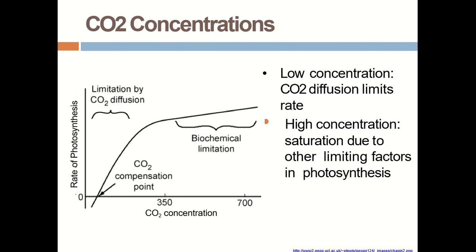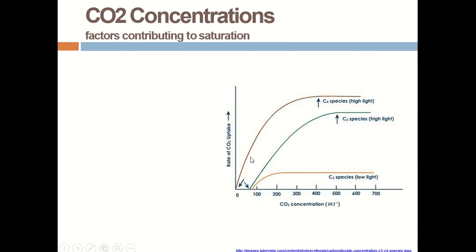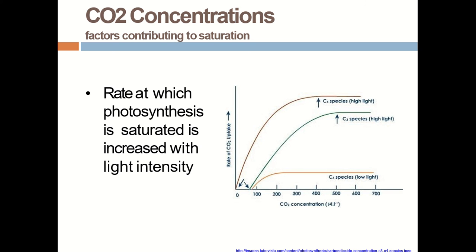Another factor is CO2 concentration. In low CO2 concentration the diffusion rate is limited. In high CO2 concentration, saturation is achieved with other limiting factors like light. As discussed with light intensity, the rate of photosynthesis is saturated with increased CO2 and light concentration.